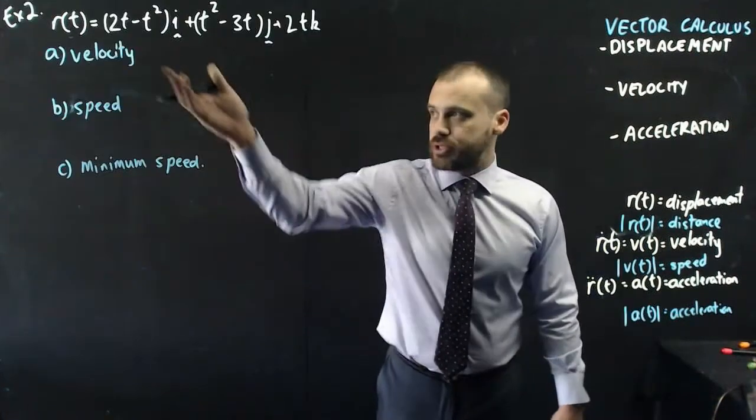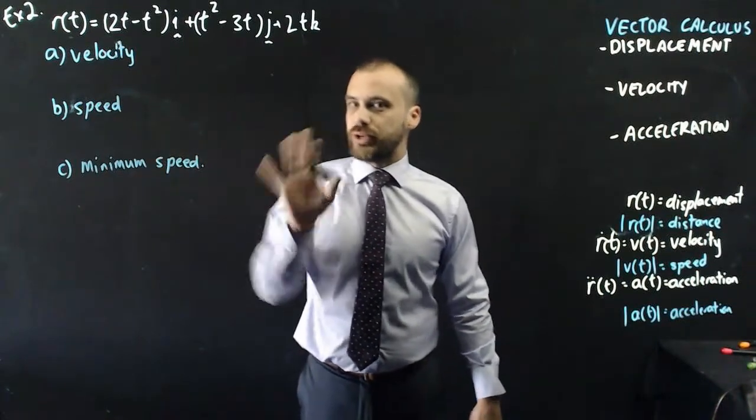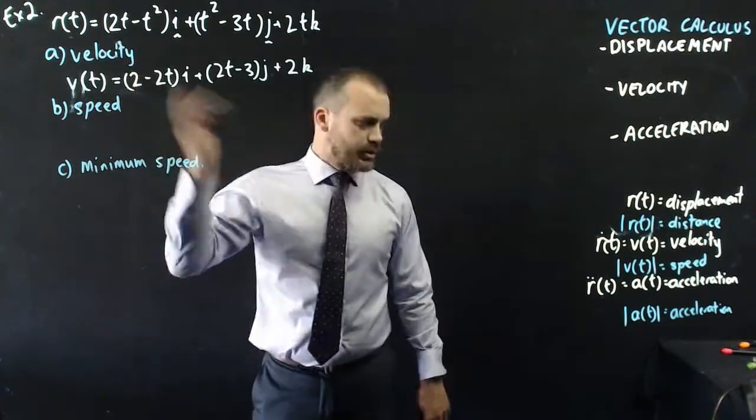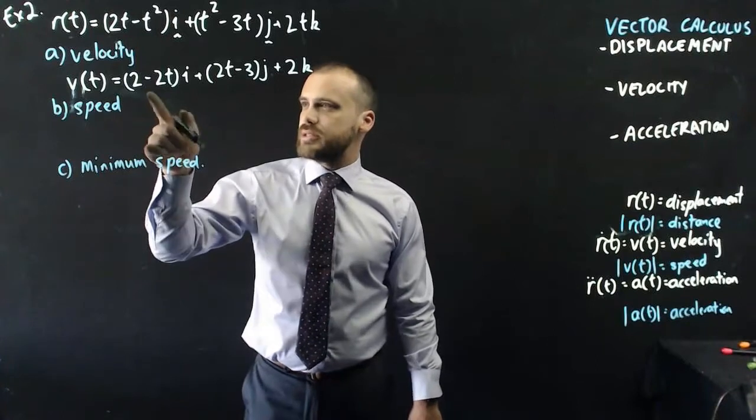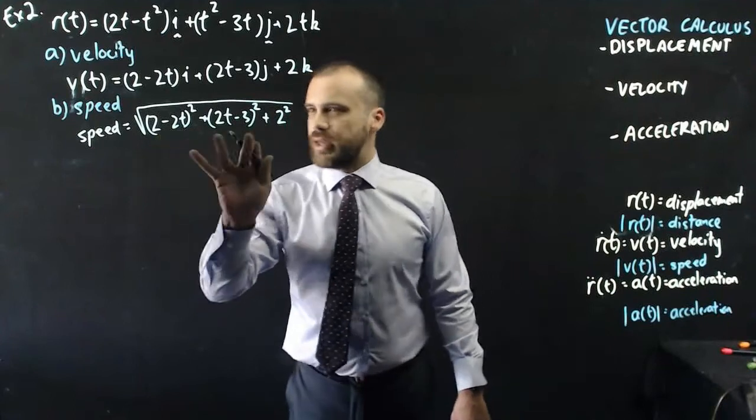All right, so I'm going to find the velocity, the speed, and the minimum speed of this particle. Now, these two are going to be really straightforward derivative here. So, that's easy. Now, the speed is going to be the magnitude of this.